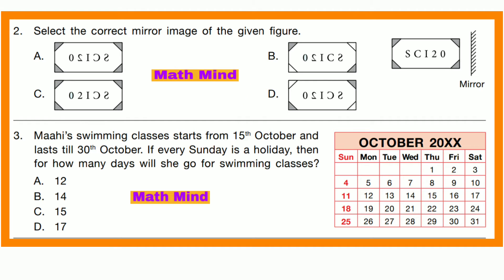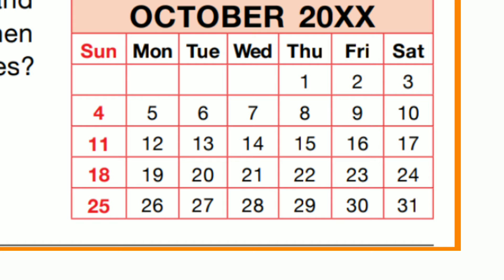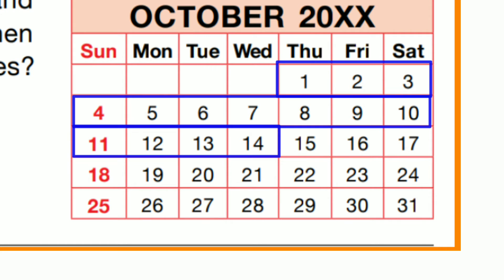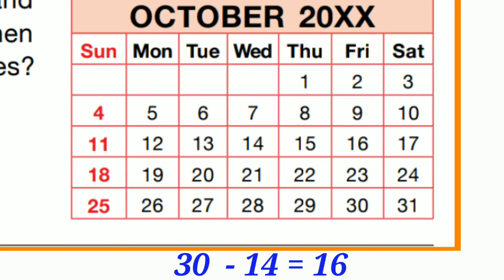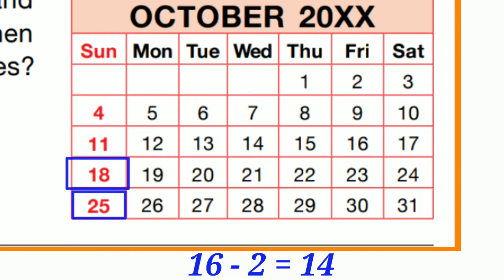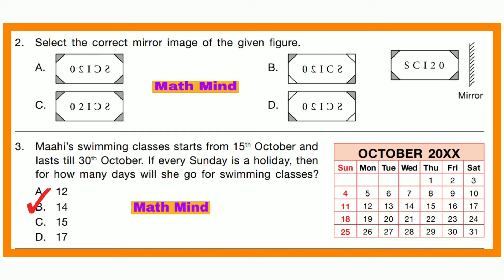Question number 3. Mahi's swimming classes start from 15 October and last till 30 October. If every Sunday is a holiday, then for how many days will she go for swimming classes? Mahi started her swimming classes from 15 October. So from 1 to 14, she did not attend the classes. Subtracting 14 from 30, we get 16. Now, out of 16 days, 18 and 25 are both holidays. So remaining days: 16 minus 2 equals 14. So option B is correct: 14.